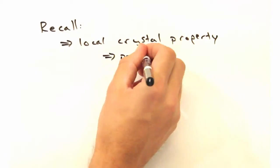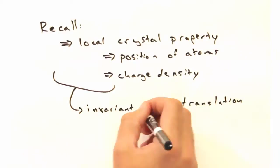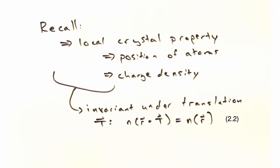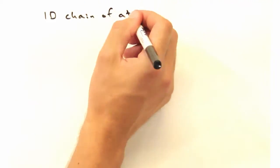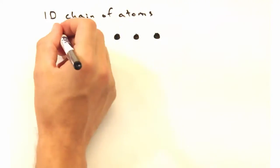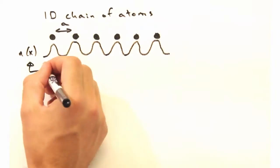Recall last week that we determined that any local crystal property, such as the atom's position or the local charge density, is invariant under the translation vector T. So suppose we have a 1D chain of atoms with spacing A. In this case, let's approximate our charge density as a wave like this, with charge buildup centered over each atom.